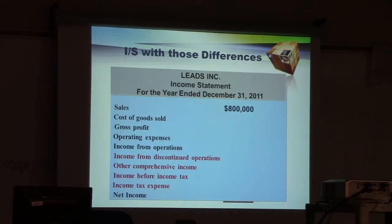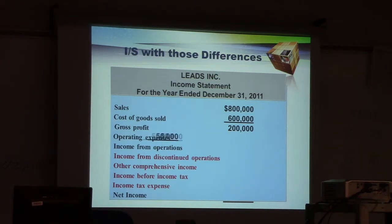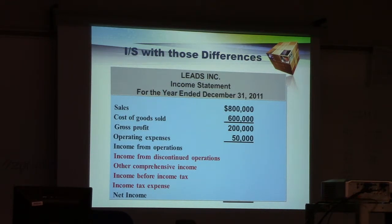Very briefly, on this slide, for example, you have sales of $800,000, cost of goods sold for $600,000, and a gross profit of $200,000. Operating expenses include all the types of expenses that you're used to. You can show this as one line on your income statement, or show all the parts. If you show it as one line, then you go to your notes and distinguish all the expenses there. So income from operations is $150,000 — this is what you're used to calling net income, the income from operations of the business.